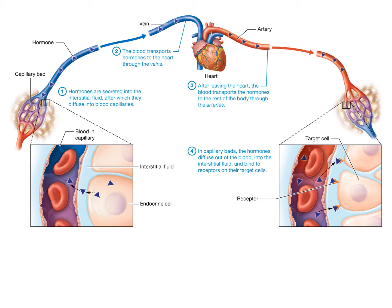The capillary bed of an endocrine organ is where it secretes its hormone into the bloodstream. It goes to the heart where it's pumped to the rest of the body. If the tissues have the correct receptor, then the hormone can interact with them. If the tissues do not have the right receptor, they simply ignore it. The target cells must have the required receptor for that particular hormone.